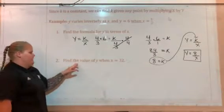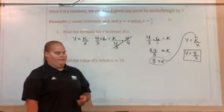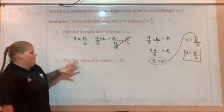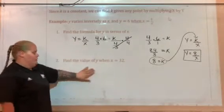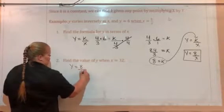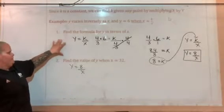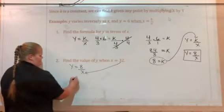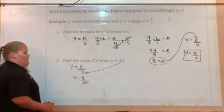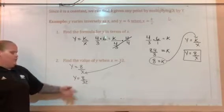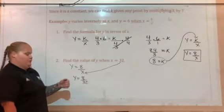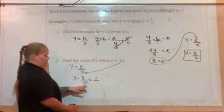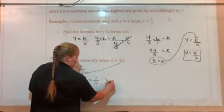Part 2 of this example says find the value of y when x is 32. Because this is under the same set of instructions, we're going to use the formula we just created, y equals 8 over x. So I'm going to plug in 32 to the x spot. So I have y equals 8 over 32. Now we just need to reduce this fraction. They're both divisible by 8. 8 divided by itself is 1, and 32 divided by 8 is 4. So y equals 1 over 4.